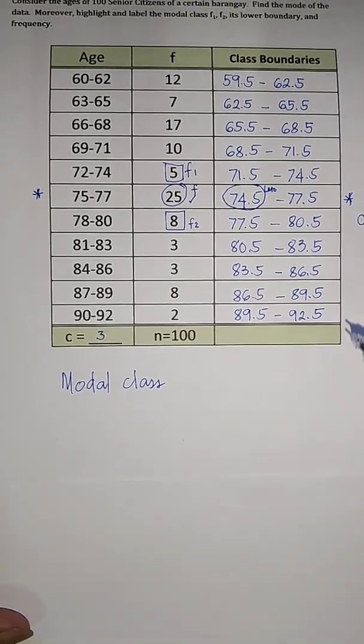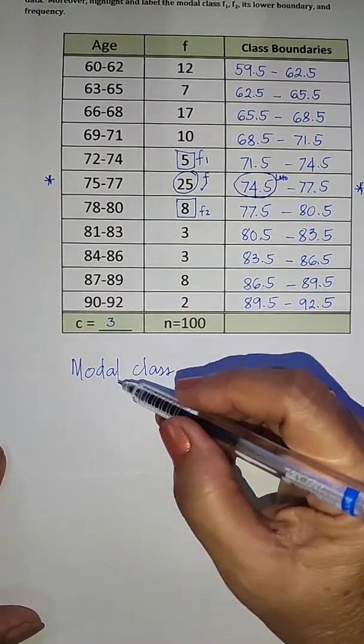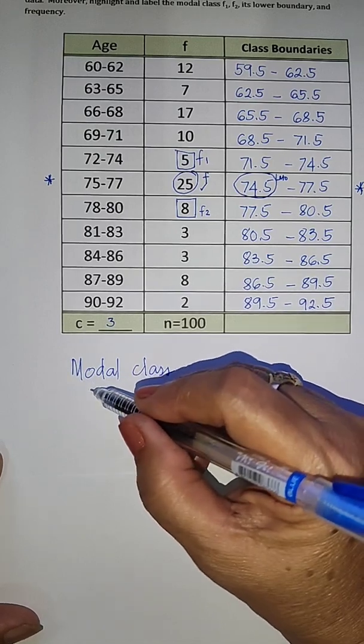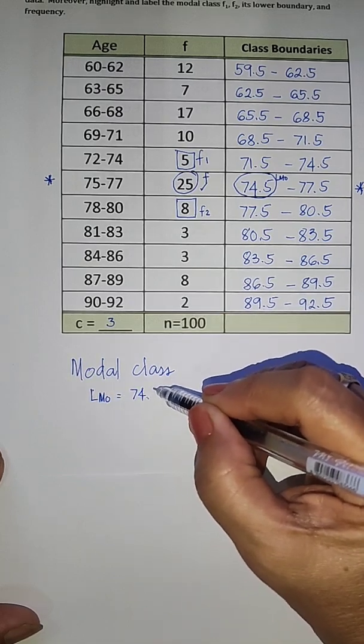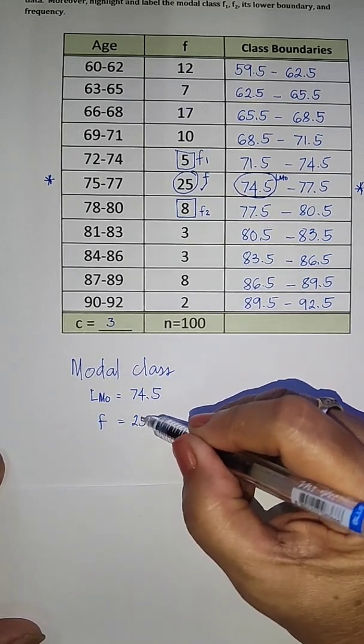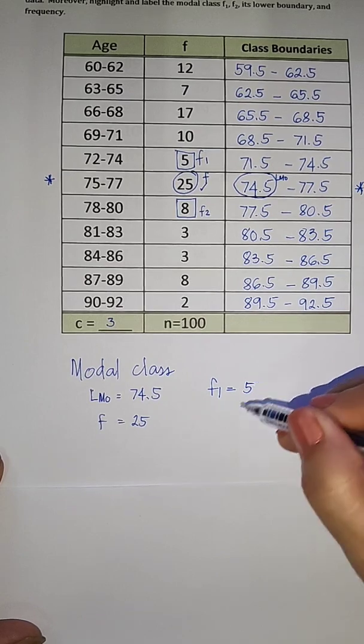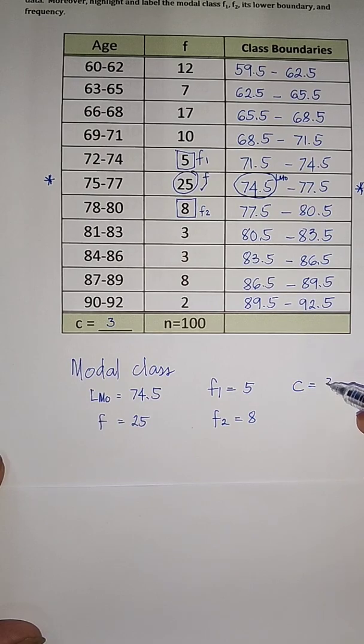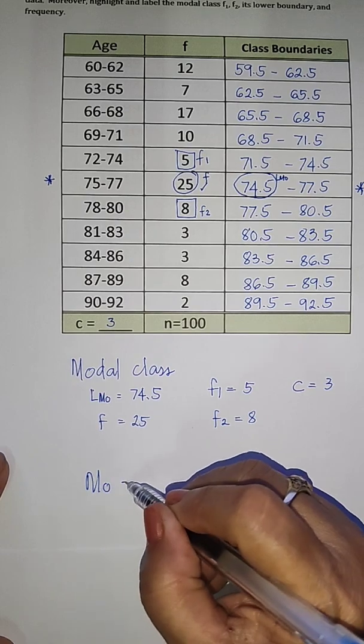Now, it would be easier if we are going to identify or write down here the different values of the data which are needed in the formula. So the lower limit of the modal class is 74.5, the frequency of the modal class is 25, our F1 is 5, and our F2 is 8, while our C is equal to 3.